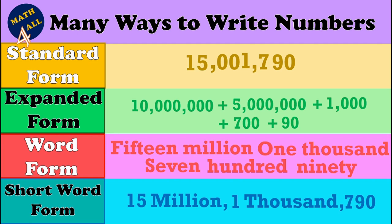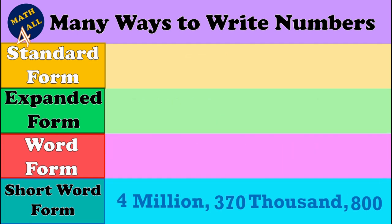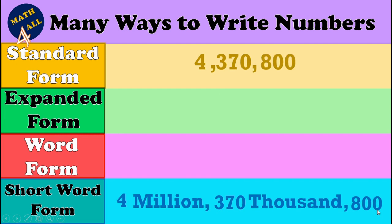Now let's see the last example. Here we have the short word form and want to get the standard form. First, we have four millions — write four, then use million as a comma. After that, we have three hundred seventy thousand — write three hundred seventy, then drop thousand as a comma.